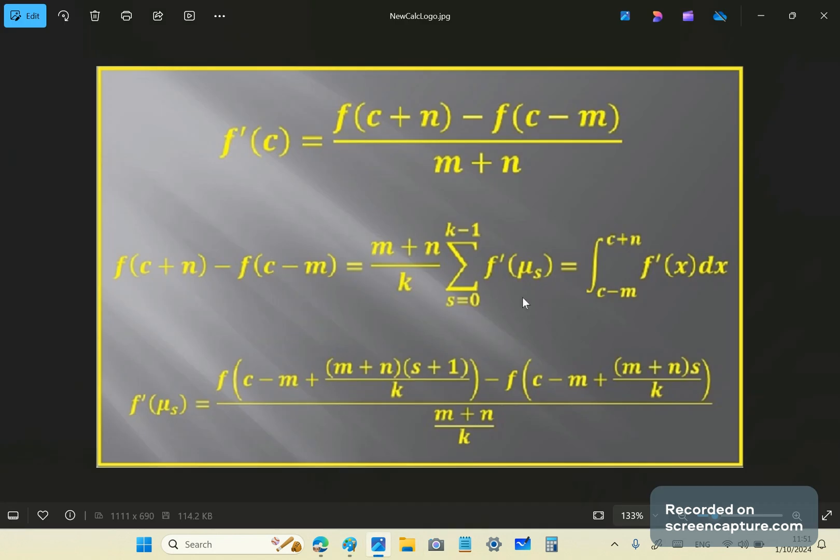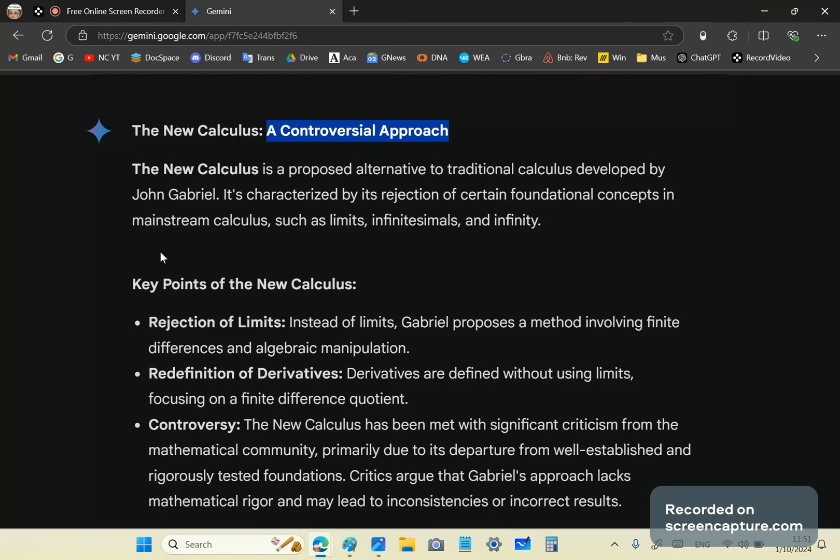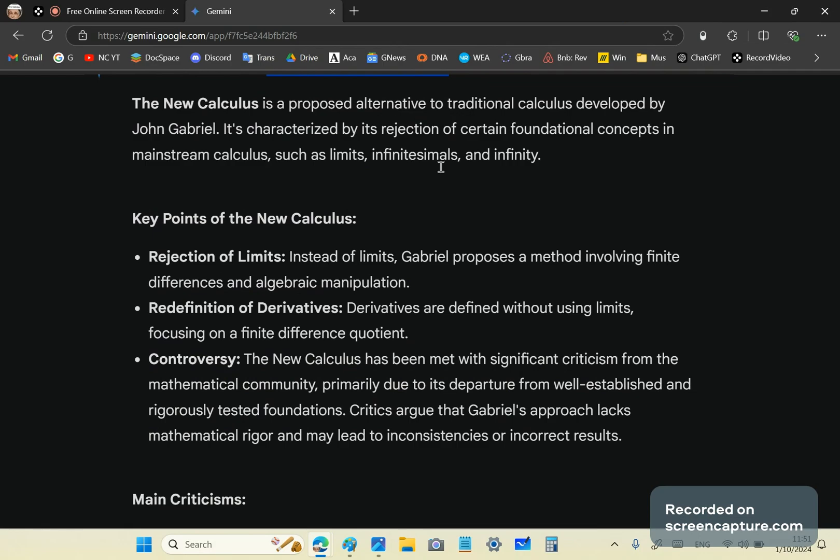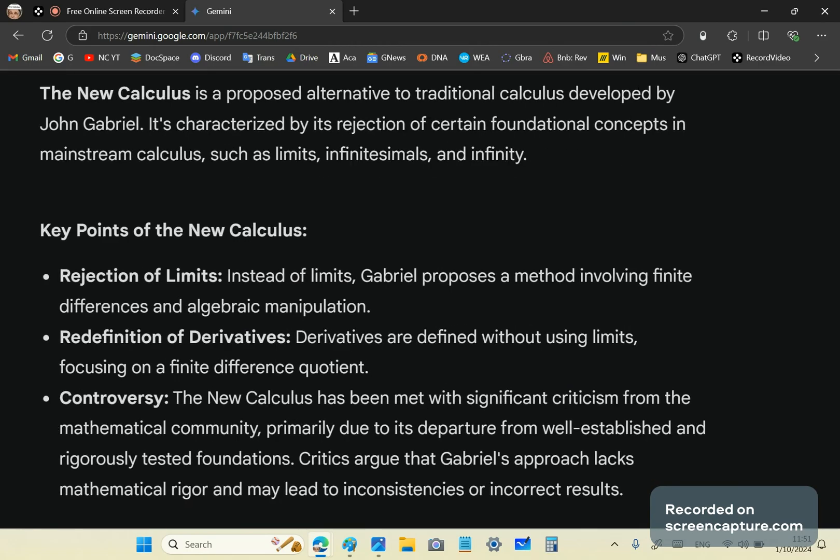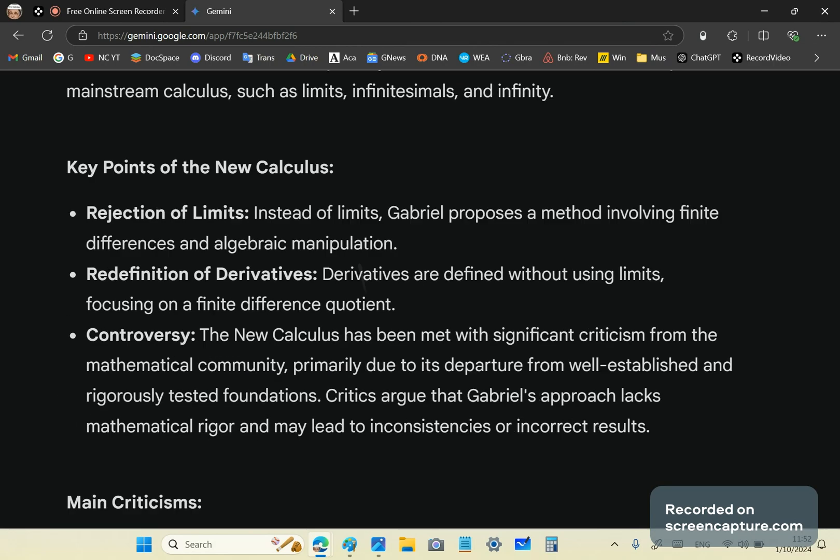Now, the new calculus derivative that I showed you, or the integral rather, is also equal to this middle term expression, which has f prime of mu sub s that is equal to this. So it works with the mean value theorem all the time. There's no use of infinitesimals or infinity or Riemann sums or any of that drivel. So, let's go back to the conversation. So, it says that it's characterized by rejection of certain foundational concepts in mainstream calculus such as limits infinity.